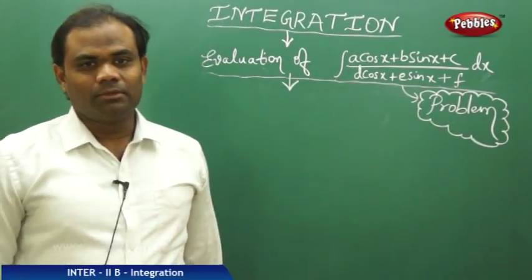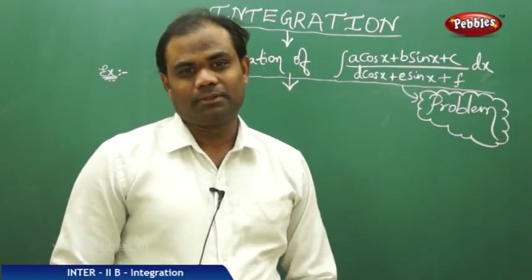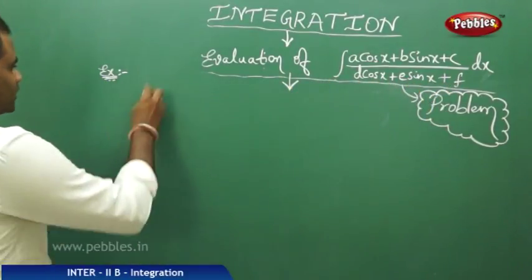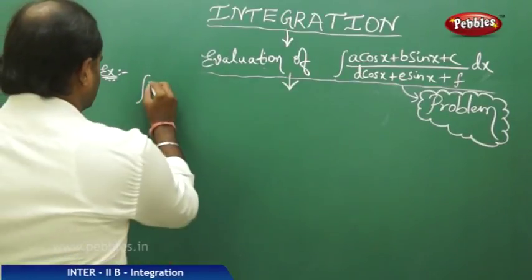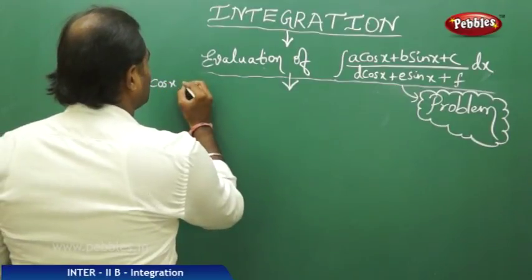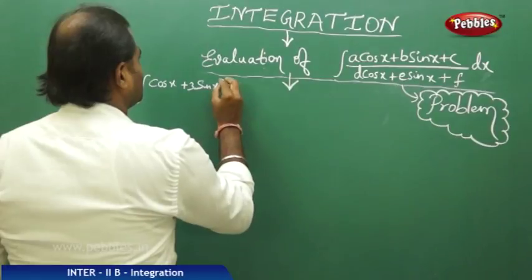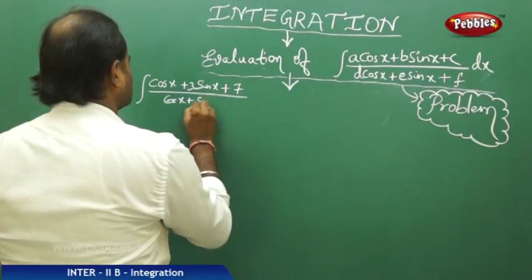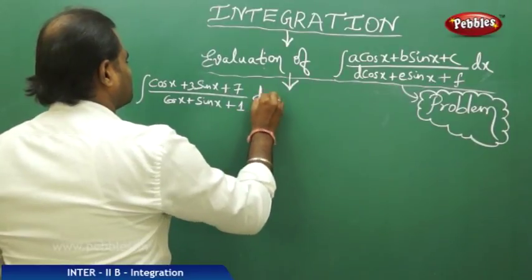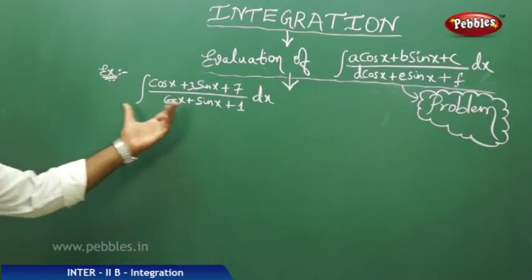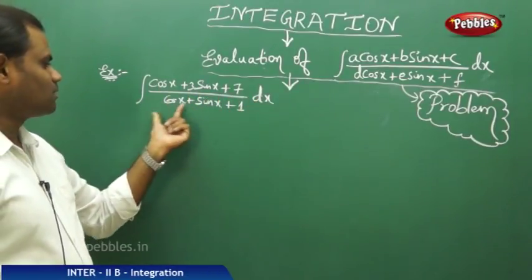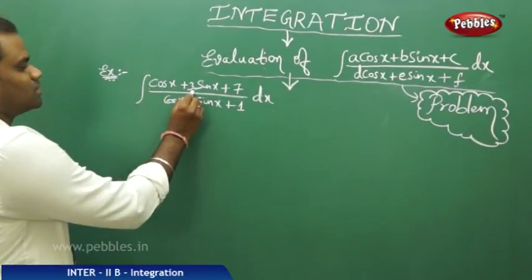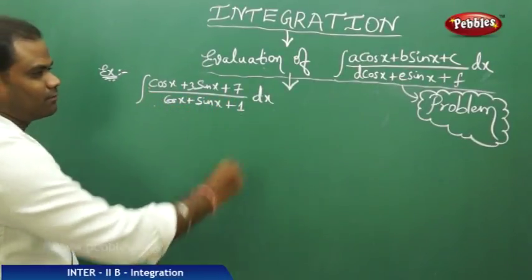Now let us take an example problem to support the evaluation of an integral of this type. We evaluate the integral of (cos x + 3sin x + 7) / (cos x + sin x + 1) dx. This is represented with a = 1, b = 3, c = 7, d = 1, e = 1, and f = 1.